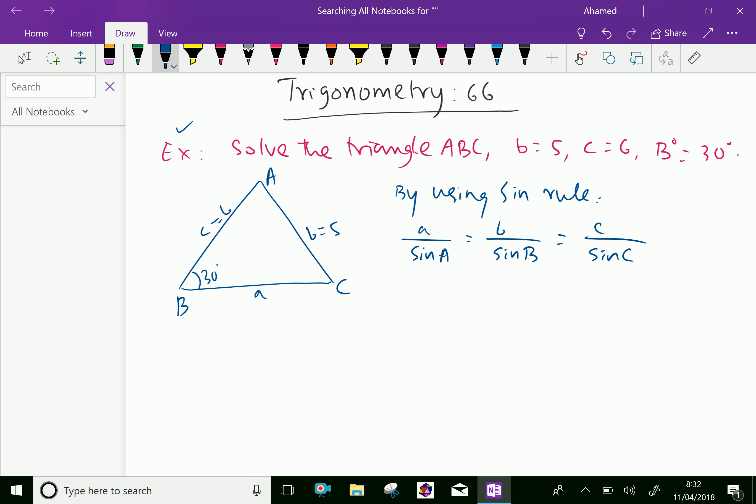Now, we will write a over sine A equals b, which is 5, over sine B, which is sine 30, and c is 6 over sine C.